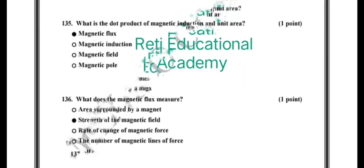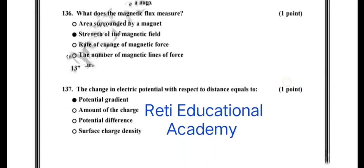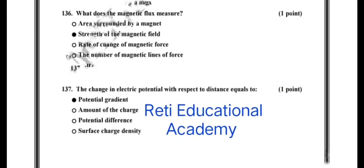The correct answer is it measures strength of the magnetic field. Question number 137: The change in electric potential with respect to distance equals to potential gradient. This is the correct answer, potential gradient.